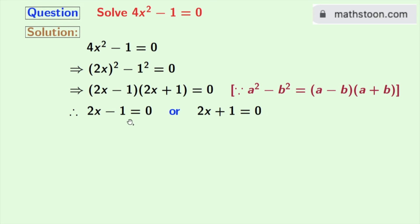If 2x - 1 = 0, then 2x = 1, giving x = 1/2. If 2x + 1 = 0, then 2x = -1, giving x = -1/2. So the final solution is x = 1/2 or x = -1/2.